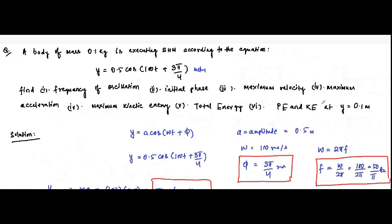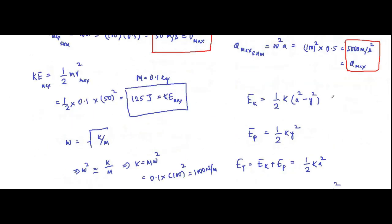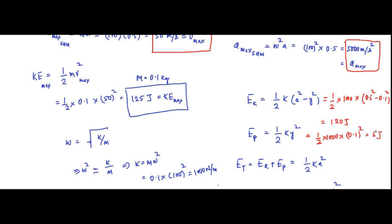Now we calculate potential and kinetic energy at y = 0.1 meter. Kinetic energy at y = 0.1 m: KE = ½k(A² − y²) = ½ × 1000 × (0.5² − 0.1²) = ½ × 1000 × (0.25 − 0.01) = 120 joules. Potential energy at y = 0.1 m: PE = ½ky² = ½ × 1000 × (0.1)² = 5 joules.